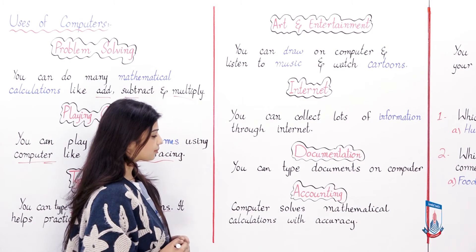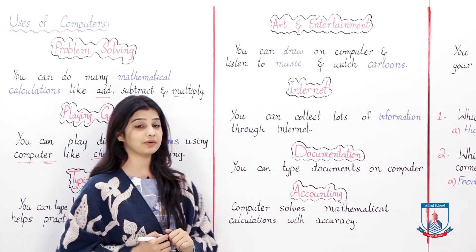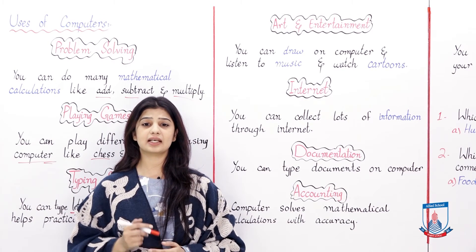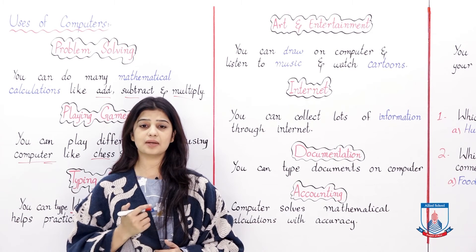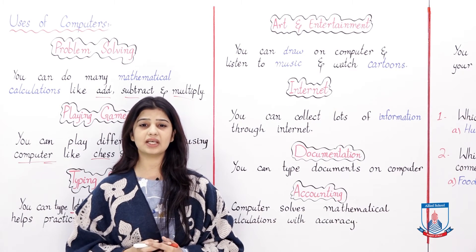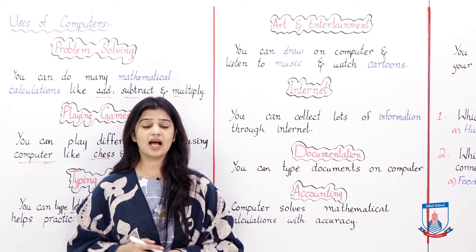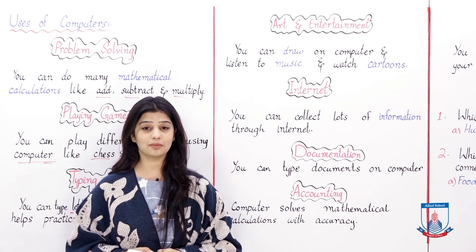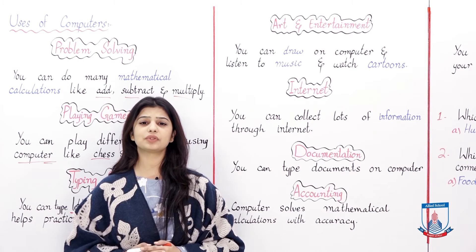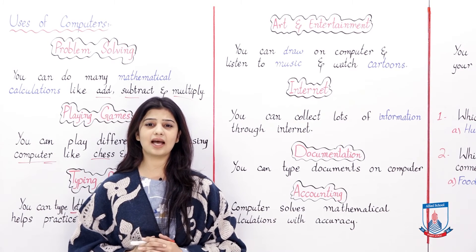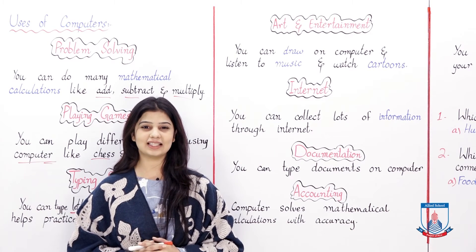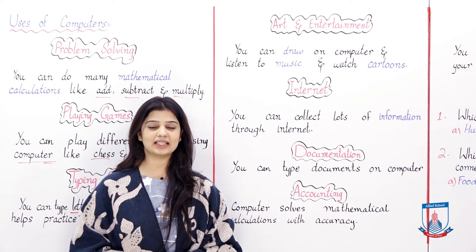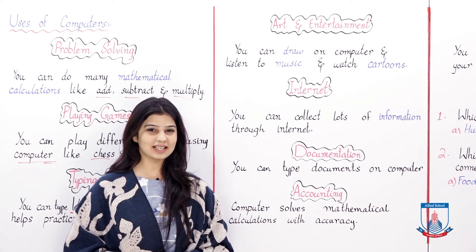The next use is accounting — computer solves mathematical calculations with accuracy. Accounting means performing complex calculations. The computer does complex calculations that our minds cannot do as quickly. It gives you accurate results very fast, so this is how the computer helps us with accounting.